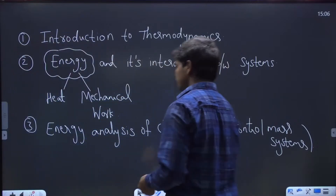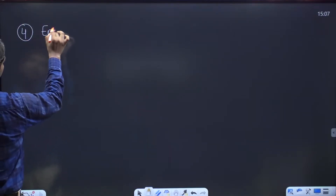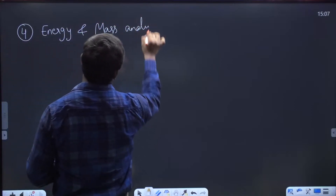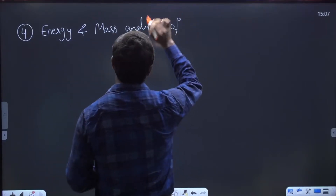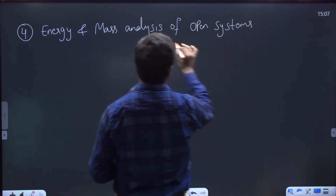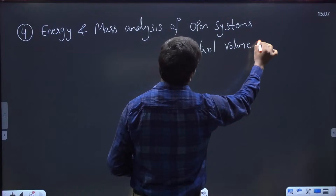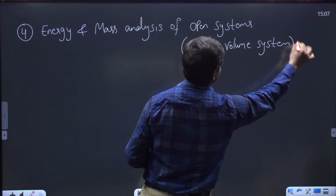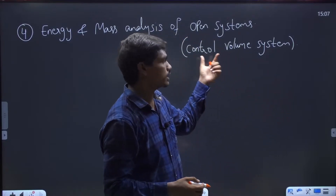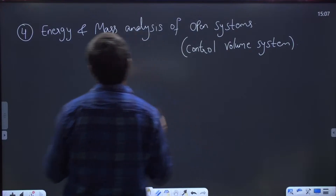Going to the fourth chapter, we see energy and mass analysis of open systems. Open systems are also called control volume systems. Why the open system is called a control volume system and why the closed system is called a control mass system — we'll discuss this in the first chapter, Introduction to Thermodynamics.